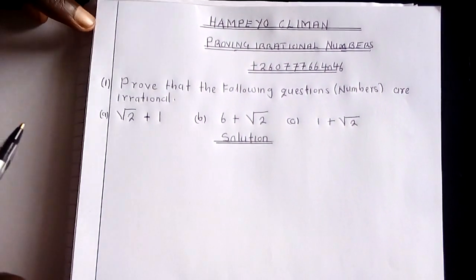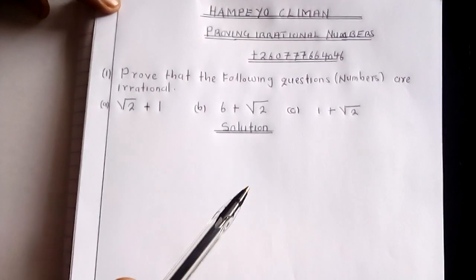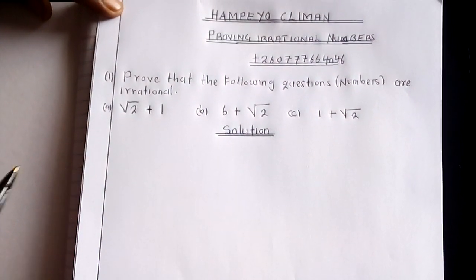So now this question is simply saying prove that the following questions or numbers are irrational.